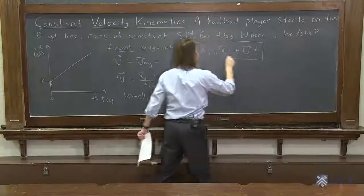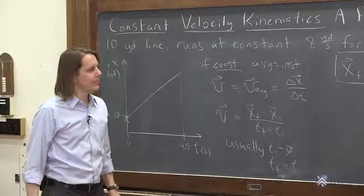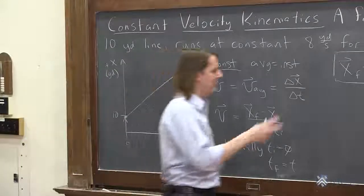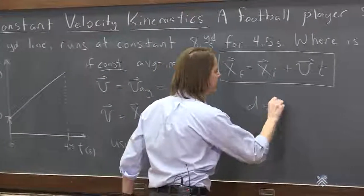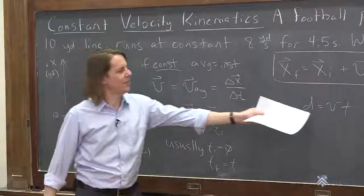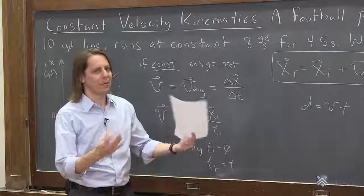That is the constant velocity kinematics, what is the position? You may know the street version of this. If you learned this in an earlier physics class, you may have just memorized d equals vt. It's really the same thing. You just don't have the vector notation on it, and d means xf minus xi, sort of how far you got.